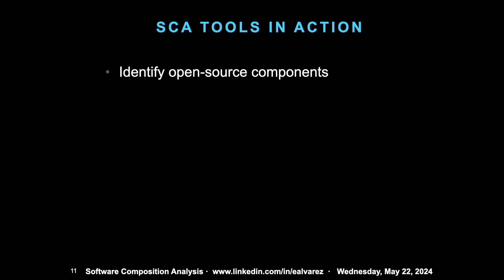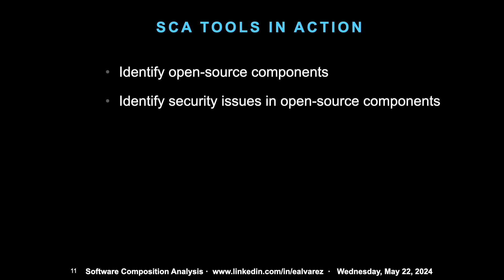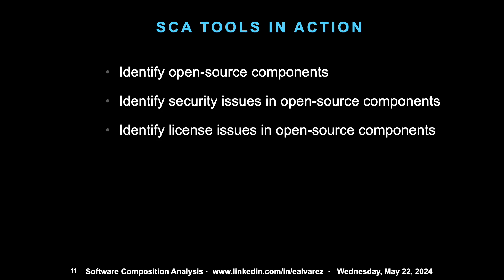SCA tools in action. We will see the identification of open source components and the identification of security issues. The identification of open source components is not as simple as it may seem, because of the nature of software packaging — it may not be readily apparent from the project what components are present. If there's a package manager it's relatively easy, but there are other components that are just copied in. Once you identify them, you have to identify the open source issues and then identify any potential licensing issues.